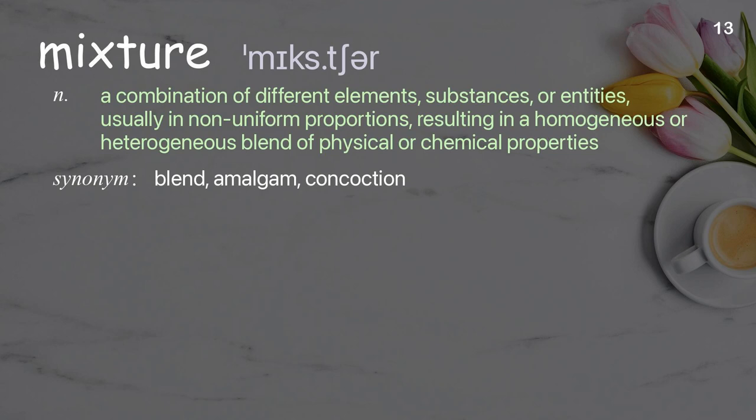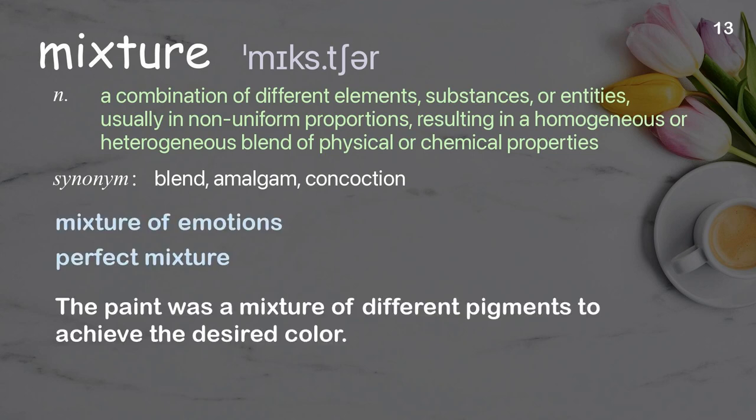Mixture: a combination of different elements, substances, or entities, usually in non-uniform proportions, resulting in a homogeneous or heterogeneous blend of physical or chemical properties. Examples: mixture of emotions, perfect mixture. The paint was a mixture of different pigments to achieve the desired color.